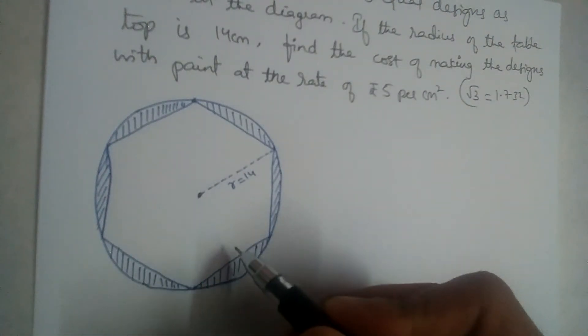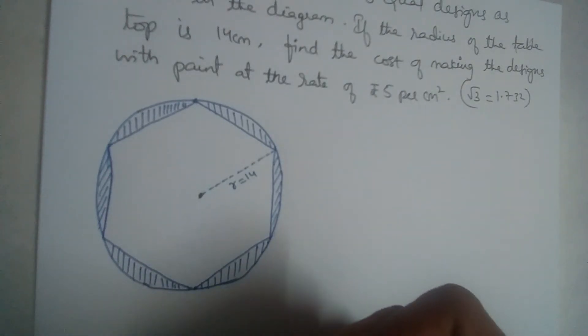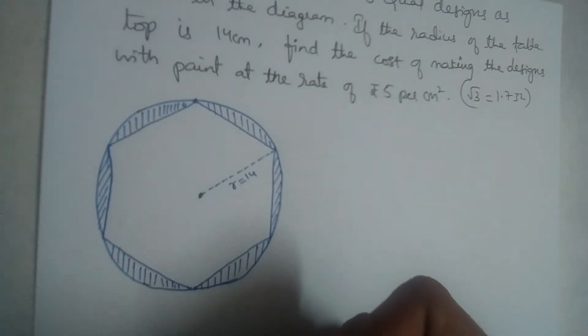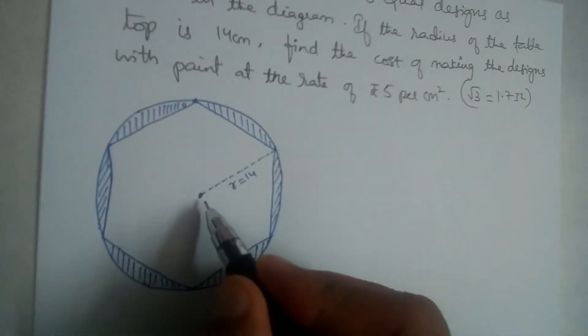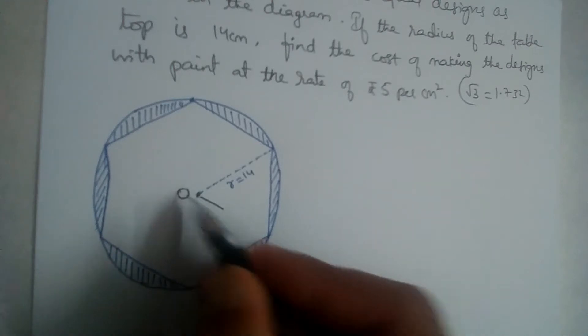We have a diagram here. Now this is a regular hexagon: one, two, three, four, five, six sides. Regular hexagon. So let us do one thing. Let the center of this circle be O and let us draw one more radius.